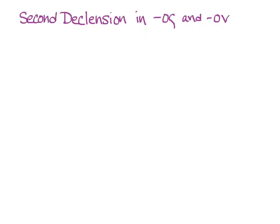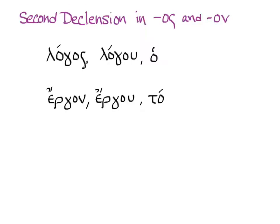This introduction to the second declension teaches you how to form words that end in -os, mostly masculine but some feminine nouns, or -on, which are neuter nouns. Our examples are logos, logou, ho — meaning 'word' — and ergon, ergou, ta — meaning 'deed.'